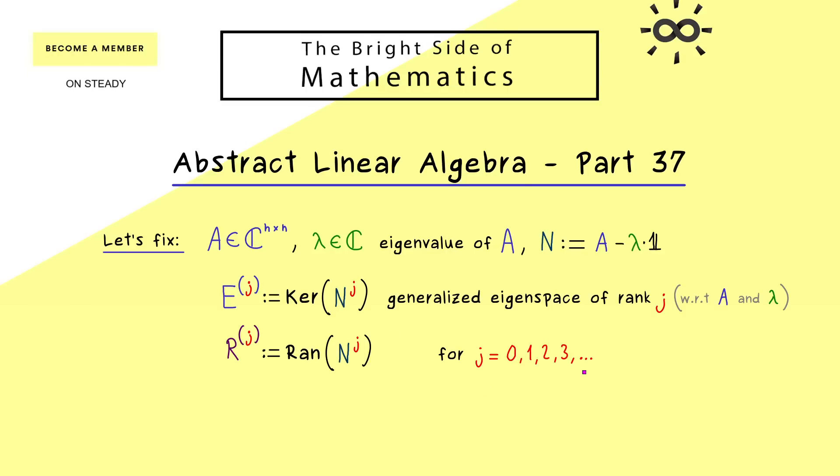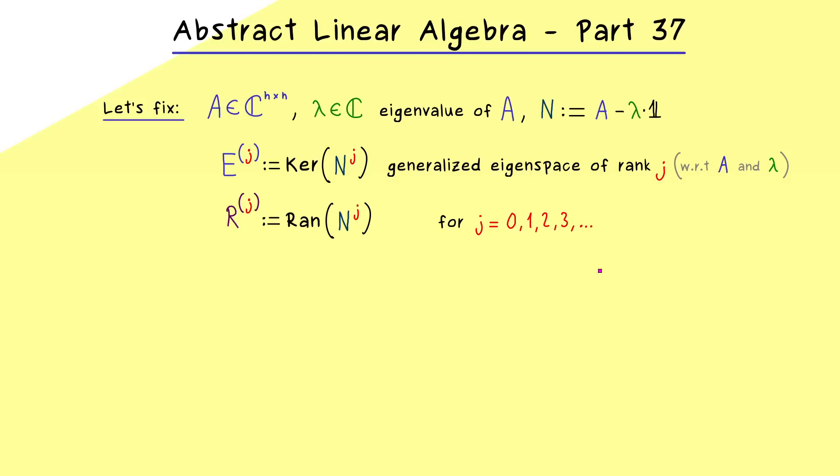However, as we have discussed in the last video, we do not really have to go to infinity because at some finite index, nothing will change anymore. Today we will actually find this index in our infinite chain. Please recall the kernels we have are nested in the following way: we can start with E^0, which is just the trivial subspace anyway. After that comes our ordinary eigenspace, which is definitely larger than just the zero vector. Then we just continue by increasing the index, but at some point we know that all these subset relations are actually equalities.